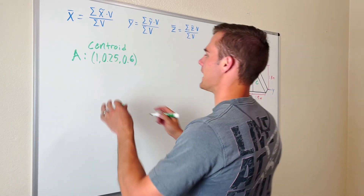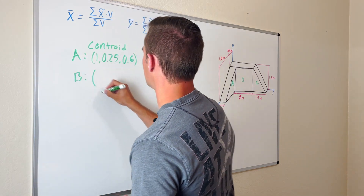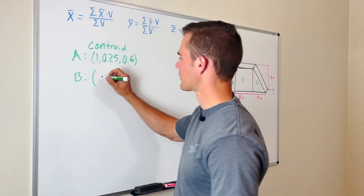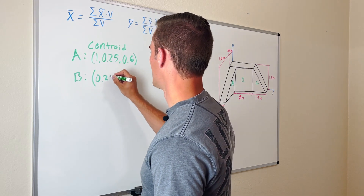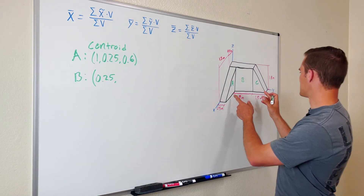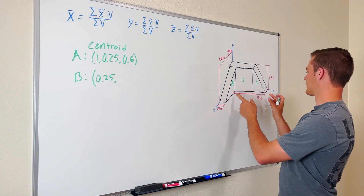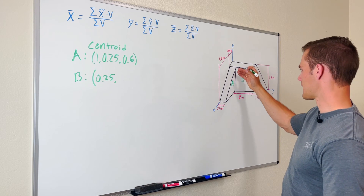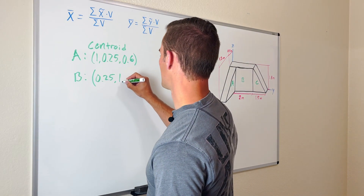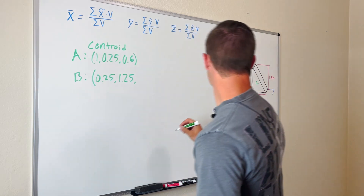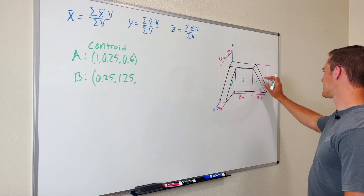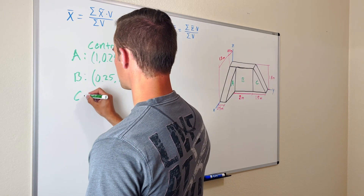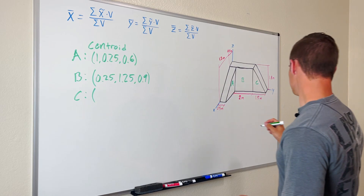The centroid of B: in the x direction it's half its depth, which is 0.25. In the y direction, it's 2 meters wide plus the 0.5 meters hidden behind A, so 2.5 total — half of 2.5 is 1.25. In the z direction it's half of its height, so half of 1.8 is 0.9.